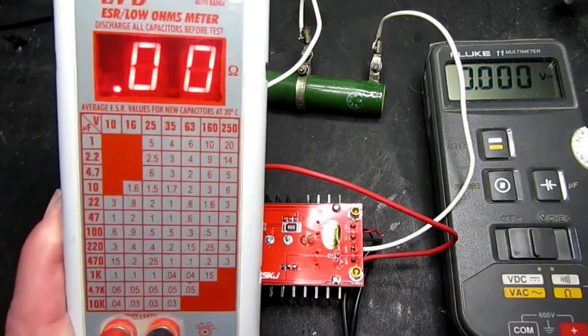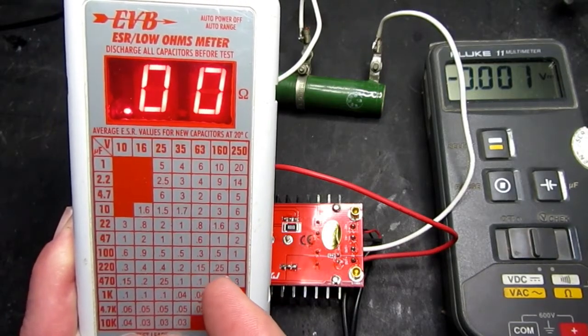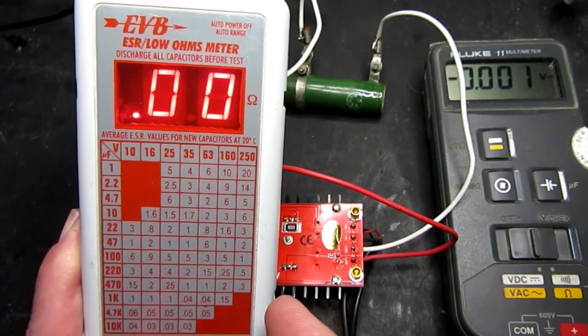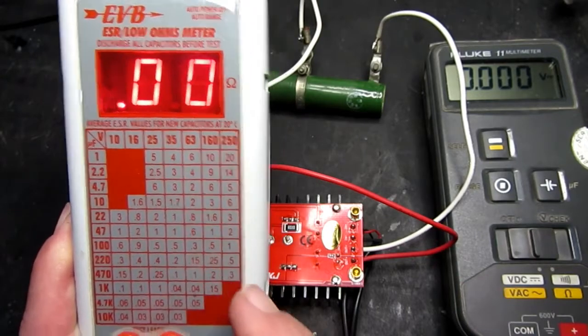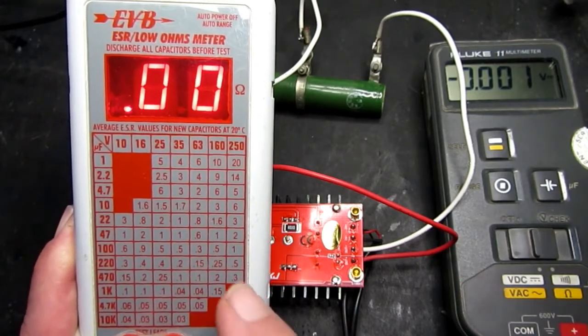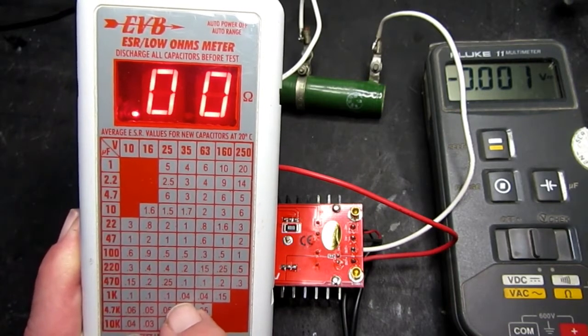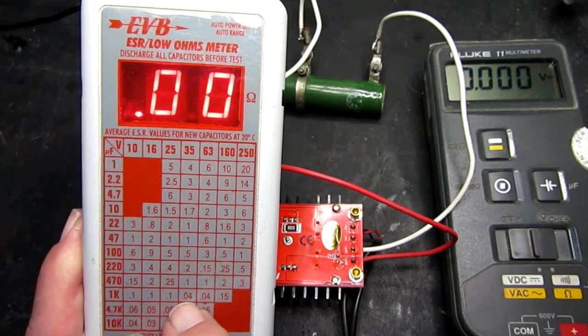Now, it does have a handy scale on here. Because the equivalent resistance changes with the voltage. It also changes with temperature. But more or less at 20 degrees C, these values should be there or thereabouts. We've got a 35 volt capacitor at 1000 microfarads. So we should be looking for a reading in the order of 0.04.